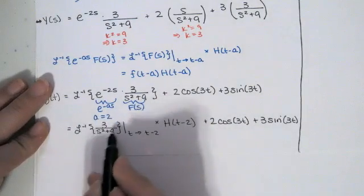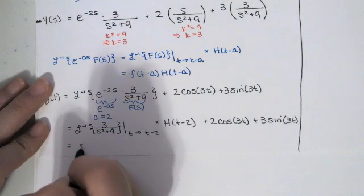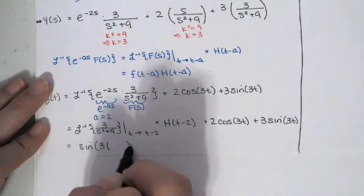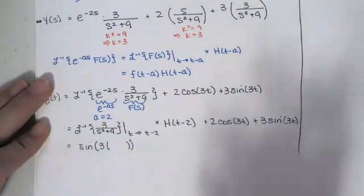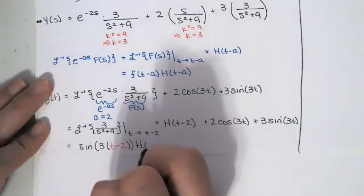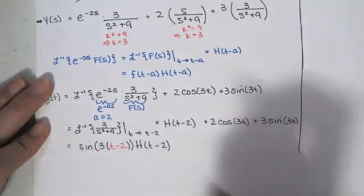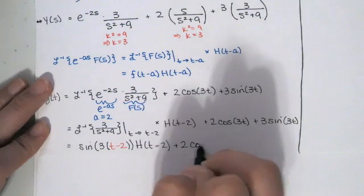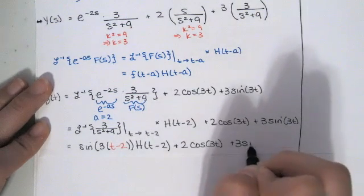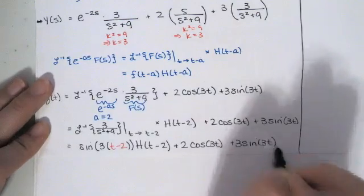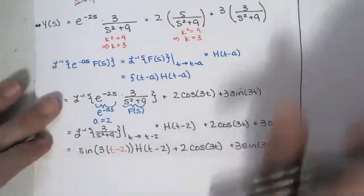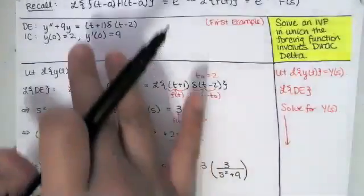The inverse transform of 3/(s²+9) is sin(3t), but we replace t with t−2 and multiply by the Heaviside function H(t−2). Then we add 2·cos(3t) and 3·sin(3t) to that. So that is the solution to this differential equation.